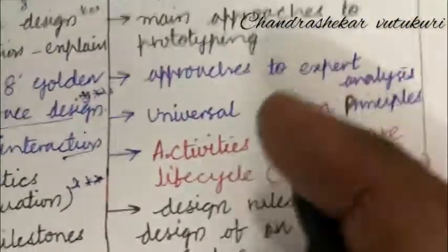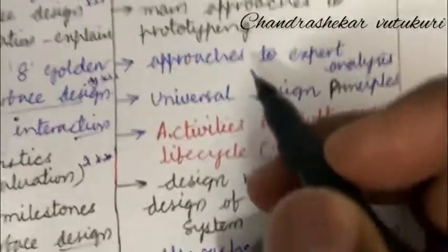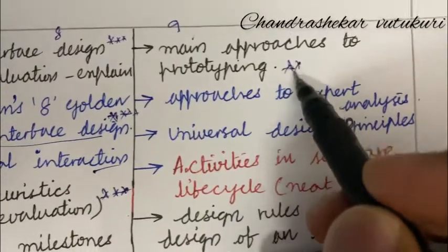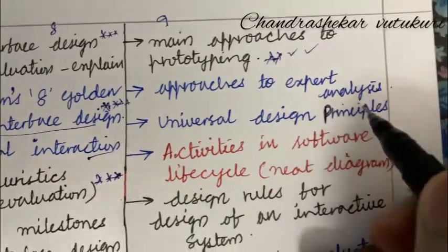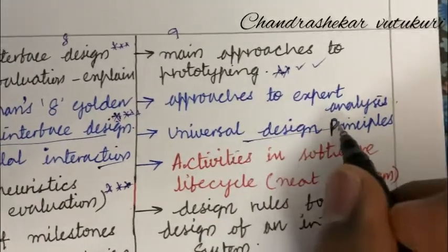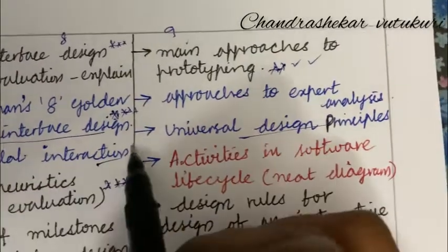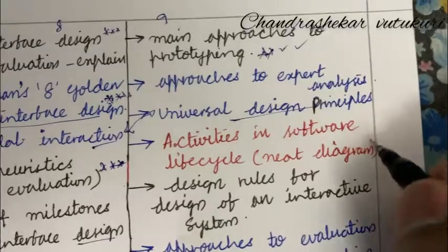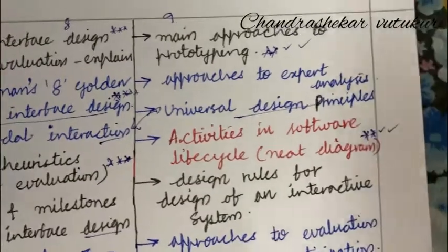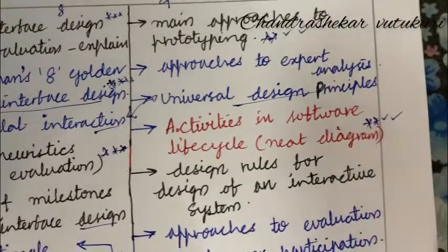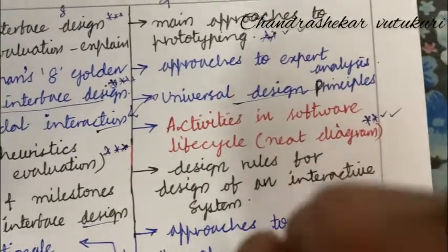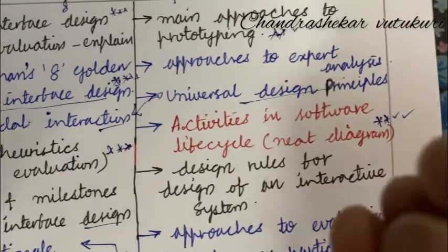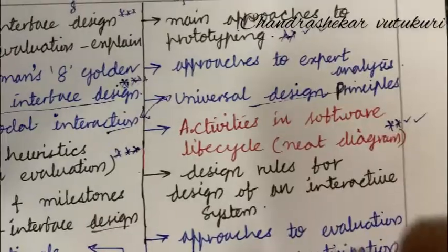As the course is all about theory, you are supposed to work out in bulletin points and write in two set of pens, blue and black. Main approaches to prototyping is also one of the important questions. Approaches to expert analysis. Universal design principles is also a very important question related to multimodal interaction. This type of question is sure in the question paper. Activities and software life cycle along with a need diagram is also one of the important questions. You are not supposed to skip any part because the question paper pattern is all about AB combination, 5-5 mark as well as 2-3 mark combination in the short question. If you skip any part that may occur in the question paper, it leads to failure as well as less marks.